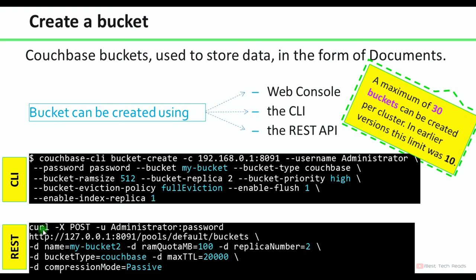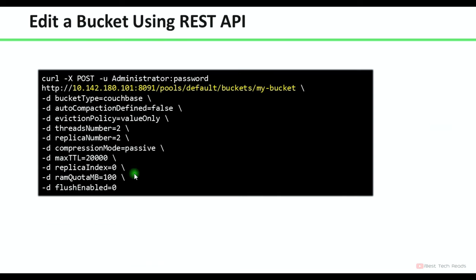This is the command to create a bucket using REST API, and how to edit a bucket using REST API. You have to provide the bucket URL, bucket type, and the settings you want to change — you can provide them accordingly. If you want to disable the flush button, you can keep it as zero. If you want to increase or decrease the replicas, you can change this value. If you want to change the eviction policy, you can change it here.